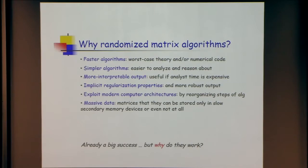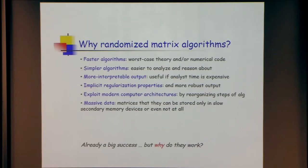The randomness might give you better condition number properties. So in certain cases you can actually form the normal equations. More interpretable output: machine learners often don't care — just get a feature vector and run with it. But the CX thing Petros was talking about: downstream scientists — geneticists, astronomers, chemists, people working on neural imaging — for them interpretability is paramount. Getting actual columns really matters. You saw an example where you chose actual SNPs rather than eigen-SNPs.